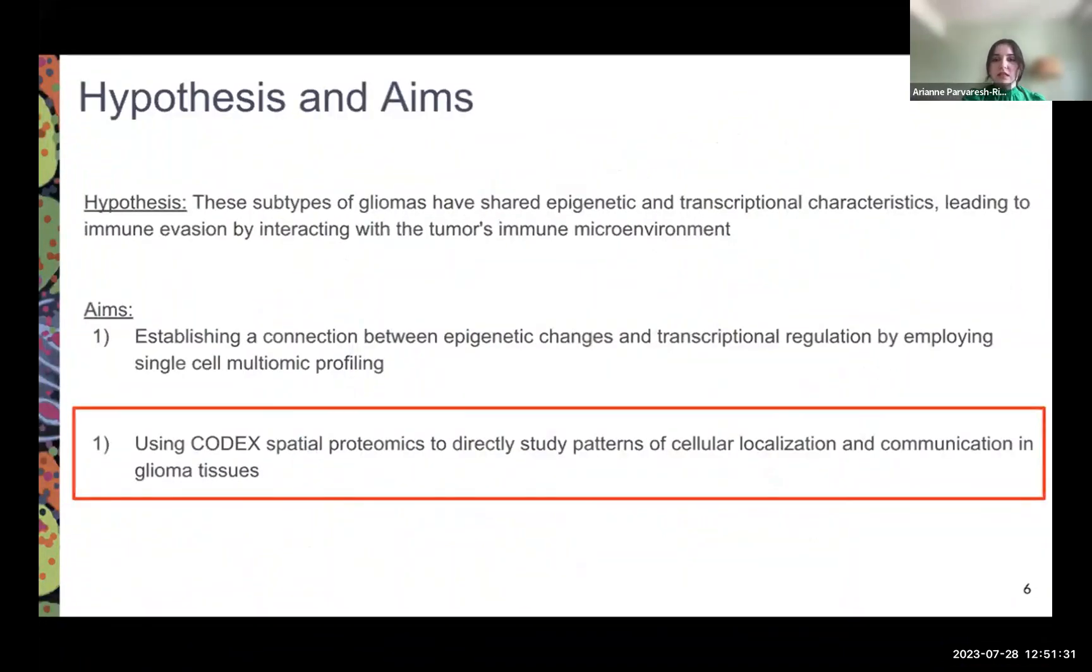We hypothesize at the TAN Lab that the subtypes of gliomas have shared epigenetic transcriptional characteristics, which leads to immune invasion by interacting with the tumor's immune microenvironment.